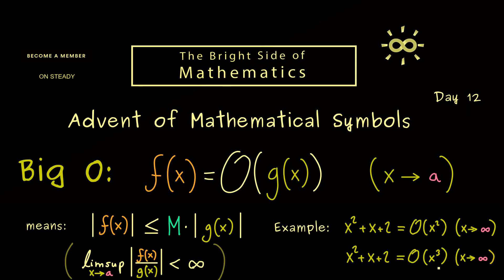Indeed this is what you can check now. x cubed grows faster than x squared. However because we only have an inequality here both things are correct.